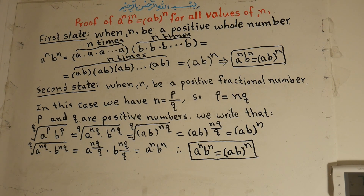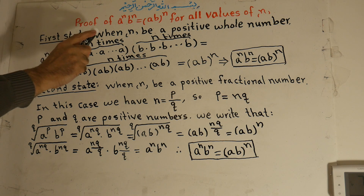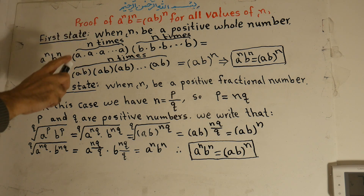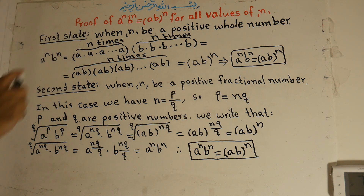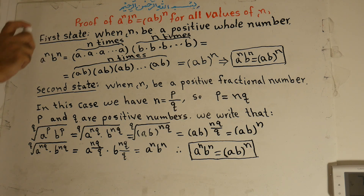Hi there. Welcome to mathematics class. Our topic is the proof that a to the power of n times b to the power of n is equal to a times b, all to the power of n, for all values of n.